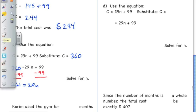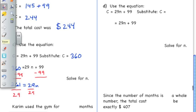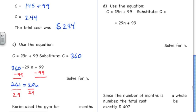My next step will be to divide both sides by 29. And when I do that, using my calculator, my brain, whichever works best for you, you're going to find that 261 divided by 29 is 9. So we know that if Kareem was charged $360, he had used the gym for 9 months.